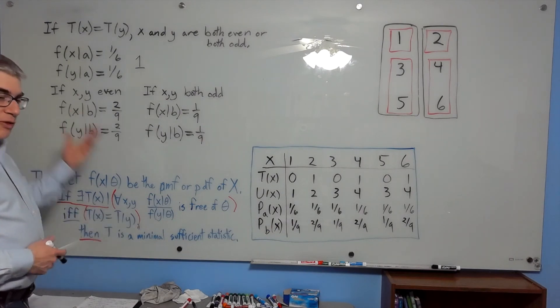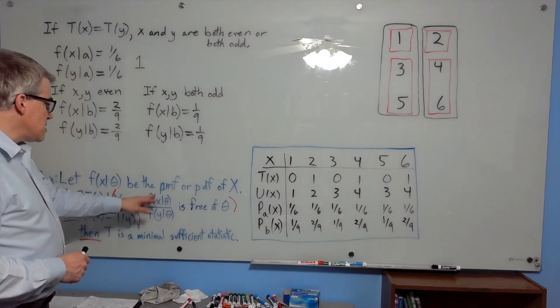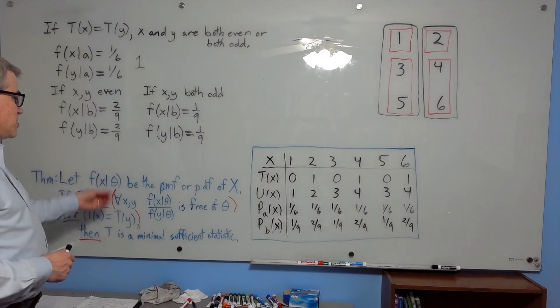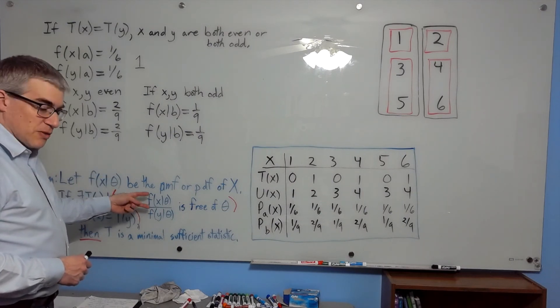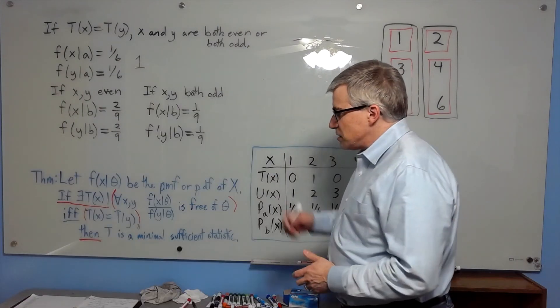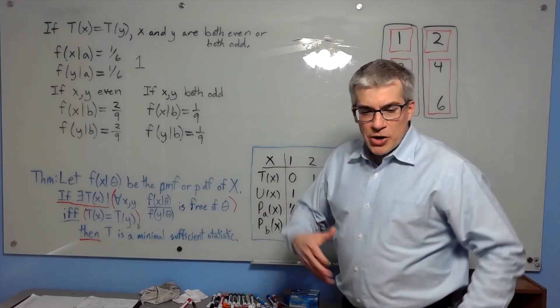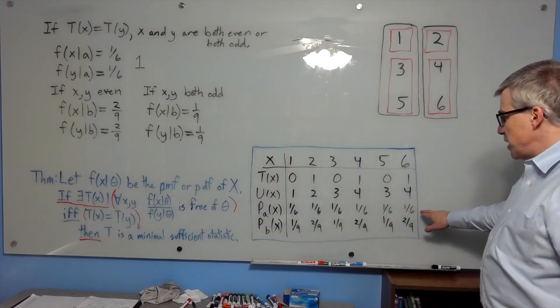Now we have to show the other way around. If t of x is not t of y, then this has to fail. So it's not true for all x and y, which means there has to exist x and y such that this depends on theta. That's actually not going to be hard to come up with because if t of x does not equal t of y, we're talking about 1 odd and 1 even. And they have different probabilities in the two cases. In the first case, all the probabilities are still one-sixth, so the fraction is still 1.